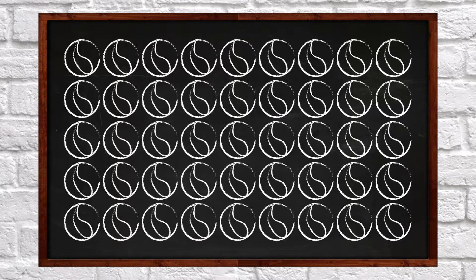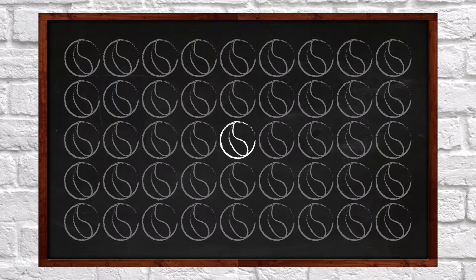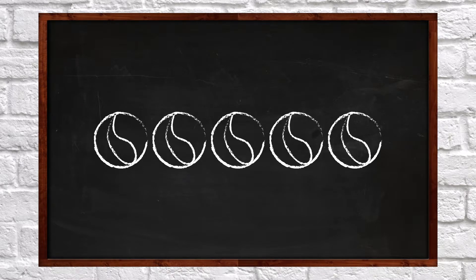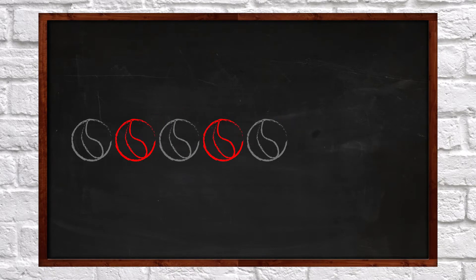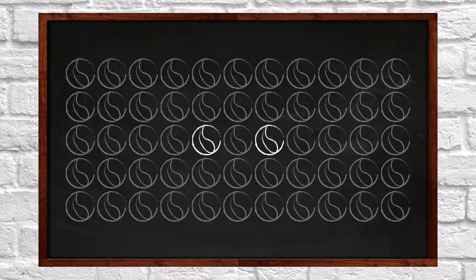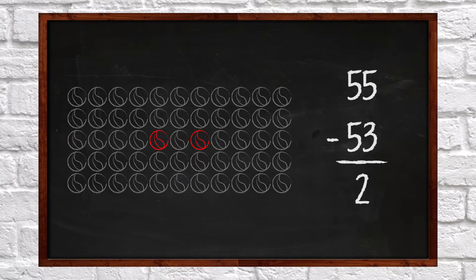If I have forty-five marbles and I subtract forty-four marbles, then I have one marble left. Forty-five minus forty-four equals one. If I have five marbles and I subtract three marbles, then two marbles are left. Five minus three equals two. And if I have fifty-five marbles and I subtract fifty-three of them, then two marbles are left. Fifty-five minus fifty-three equals two.